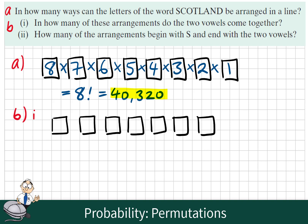Now let's think — how many options do we have for each place? So we have 7 for the first, 6, 5, 4, 3, 2, 1. So these are the positions we could place any of the letters, including this double vowel. But any one of these could be the double vowel, and it could happen in two ways — it could be OA or AO. In other words, we need to multiply this, using the fundamental principle of counting, by the two options we have for the vowels.